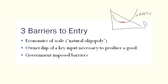That wraps up our understanding of what an oligopoly market structure is and why it might occur. We now want to turn our attention to studying how a firm makes the profit-maximizing decision given that it faces interdependence with its competitors.